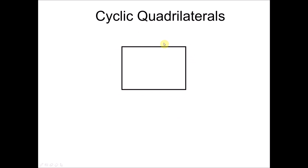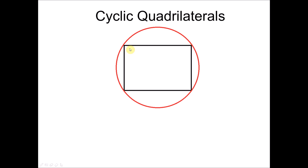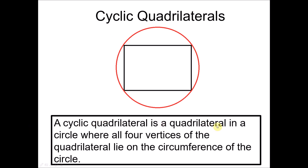Quadrilaterals are polygons formed by four straight sides — like a rectangle, for example. Cyclic quadrilaterals are quadrilaterals where all four vertices touch a circle. So if all four vertices touch the circle, this quadrilateral is known as a cyclic quadrilateral. The definition: a cyclic quadrilateral is a quadrilateral inside a circle where all four vertices lie on the circumference.